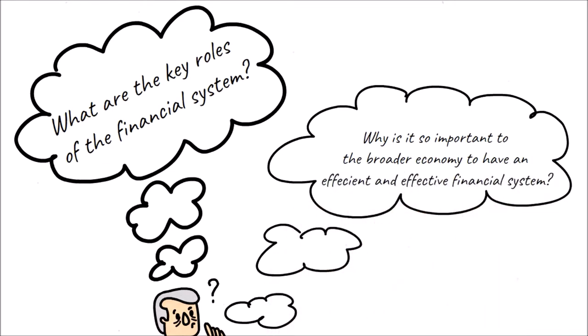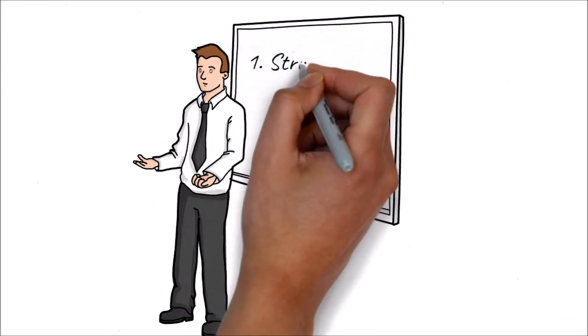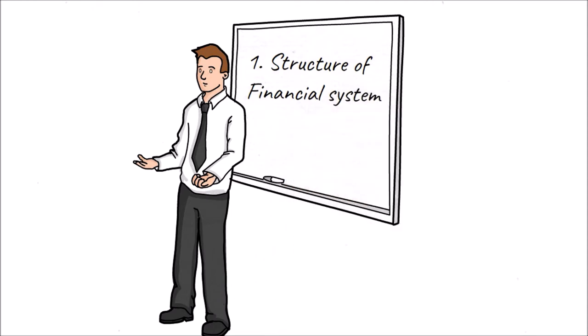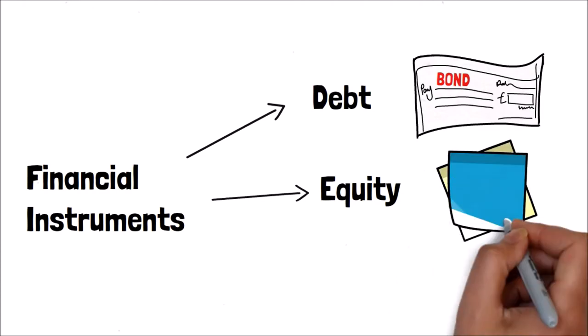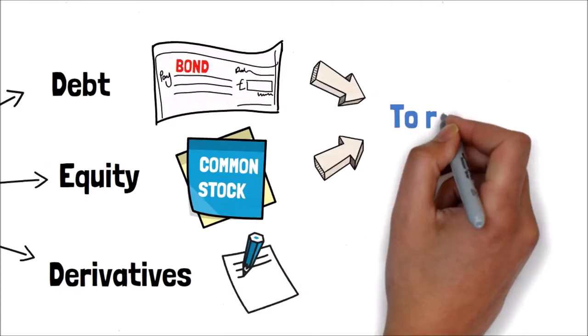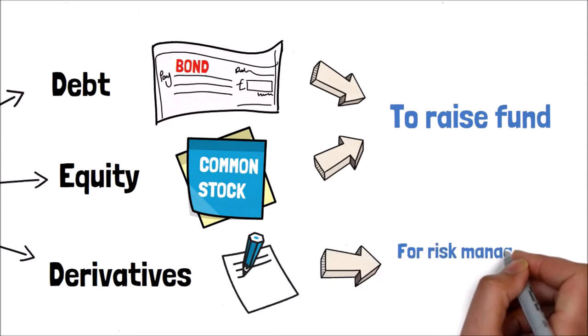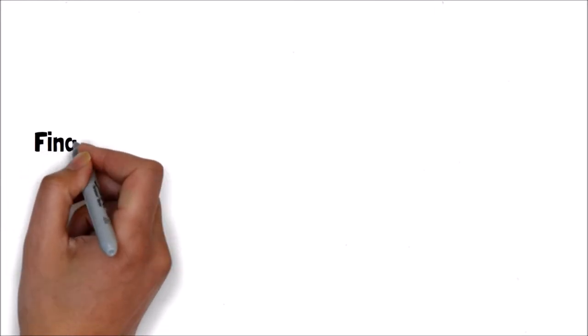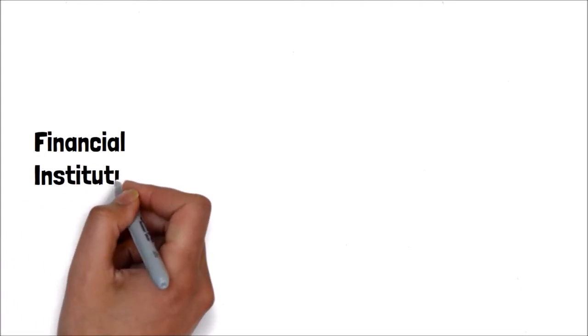First of all, we go to the overview structure of the financial system. Financial instruments: debt, equity, and derivatives. Debt and equity are used to raise funds, while derivatives are used for risk management and speculation. Financial institutions, based on the characteristics of capital mobilization and yield of capital, are divided into three categories.